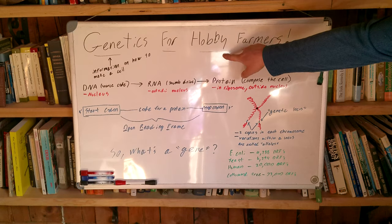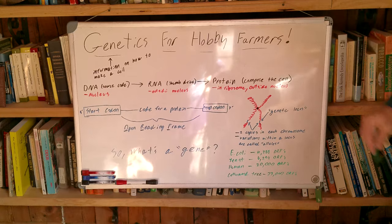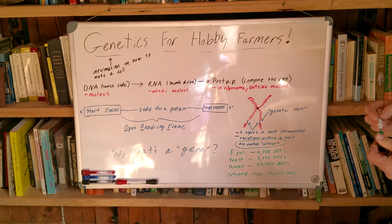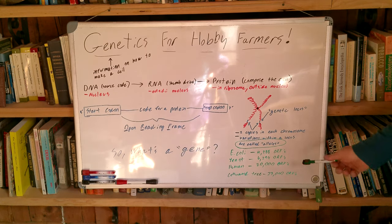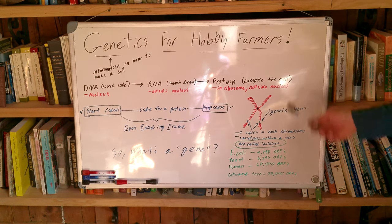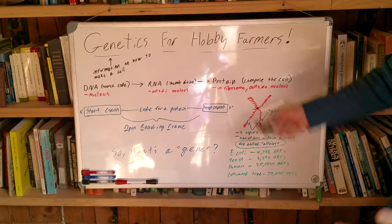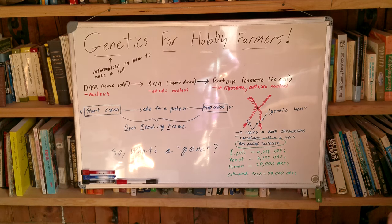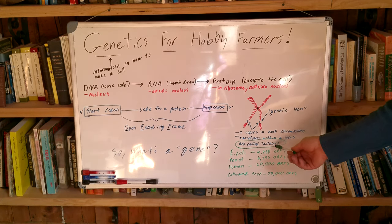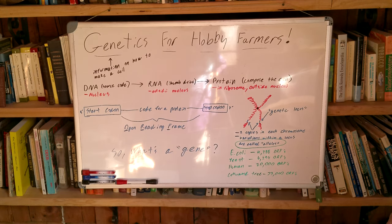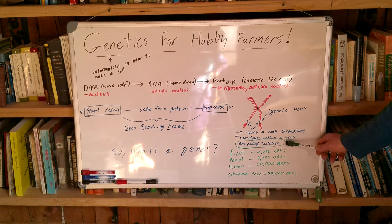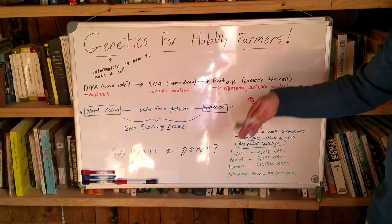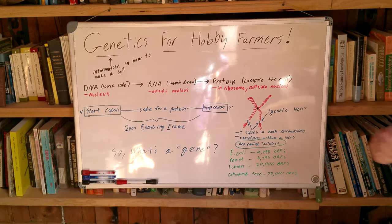As a hobby farmer, the place where you will interact with genes is mostly at the level of alleles. You're not going to be doing research trying to pin down where on a chromosome a certain open reading frame is located. You're going to be crossing two varieties of squash and trying to figure out what the outcome is going to be, and alleles are where that takes place. So we're going to go back to some of the earliest history of genetics — Mendelian genetics — which really describes how alleles interact with each other.